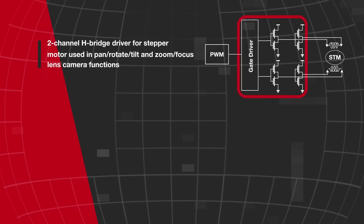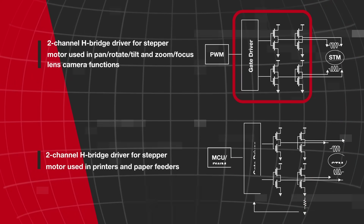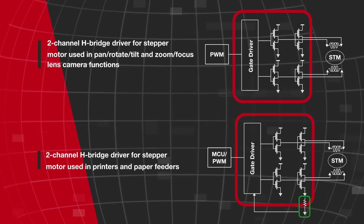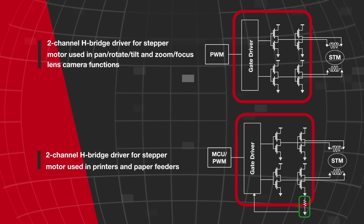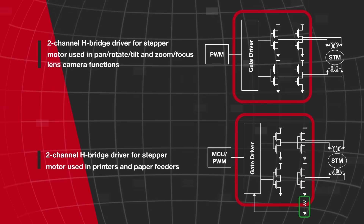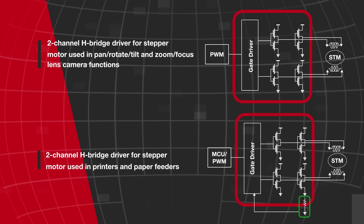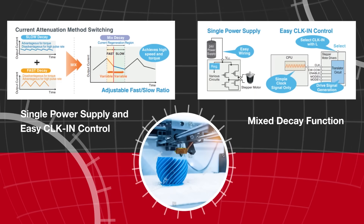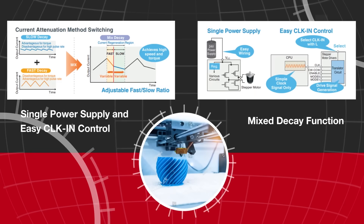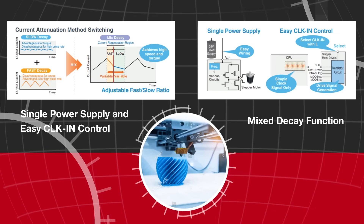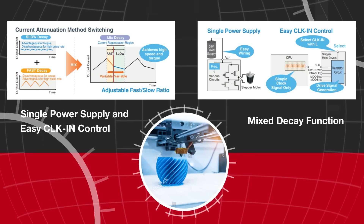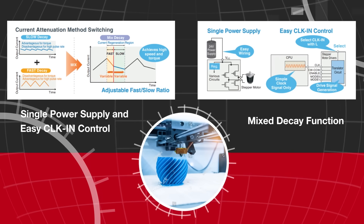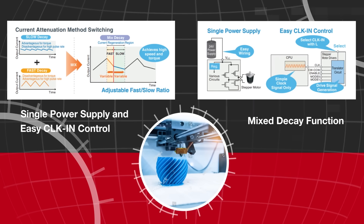Stepper motors typically leverage dual H-bridge drivers and require two power sources for the 5V control system and the 12V or 24V drive system. Methods to improve the quietness, control, and reliability of stepper motors include a mixed decay function that externally adjusts the ratio of slow and fast decay during current attenuation.